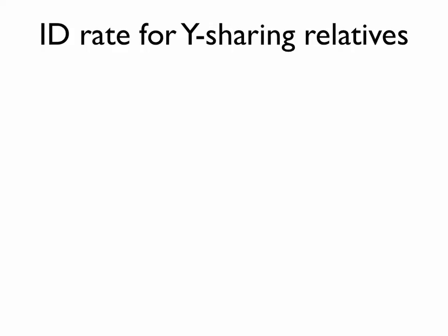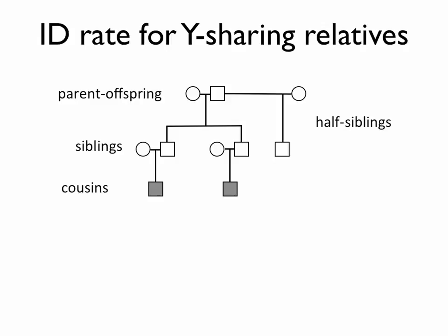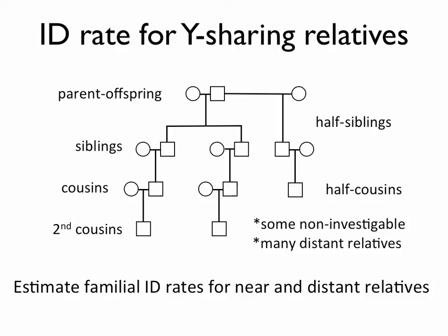After estimating the false positive identification rates between unrelated people, I was curious about the identification rates between Y chromosome-sharing relatives. I considered Y-sharing parent-offspring relationships and siblings, which are directly tested in the Myers et al. method, but then I was wondering about more distant Y chromosome-sharing relatives like half-siblings, cousins, half-cousins, and second cousins. Using a similar simulation scheme, I estimated familial identification rates for these near and distant Y chromosome-sharing relatives. I was particularly interested in distant relatives because some of these genetic relationships are unknown, making them impossible to investigate, and because we generally have more distant than near genetic relatives, so they're more likely to be in the database.